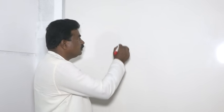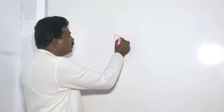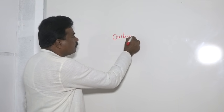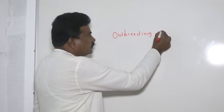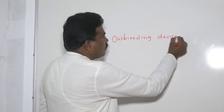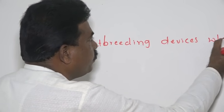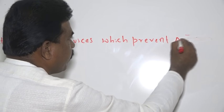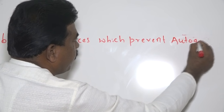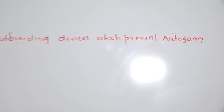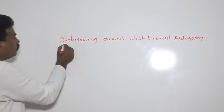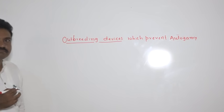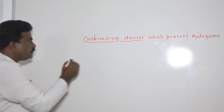In this part, you have to discuss outbreeding devices which prevent inbreeding. In our textbook, only the given heading is outbreeding devices.